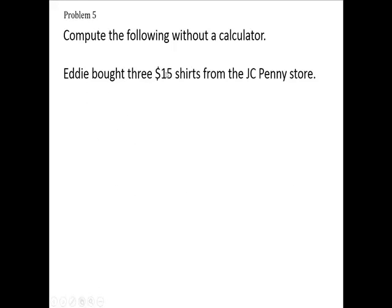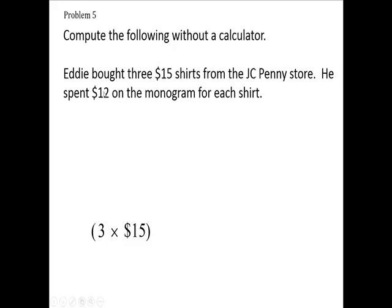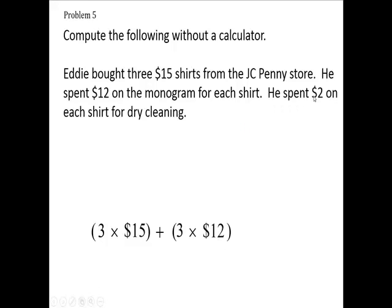First of all, he bought three $15 shirts, so that's 3 times 15. Next, he spent $12 on each of the three shirts for the monogram, so 3 times 12. And then he spent $2 on dry cleaning, so 3 times $2.